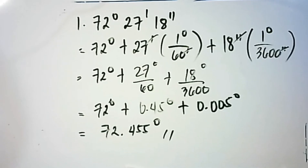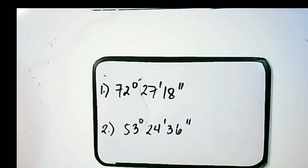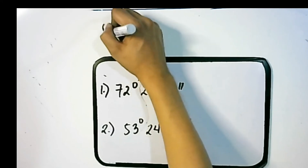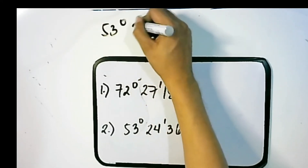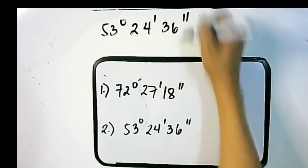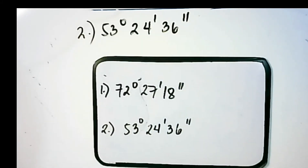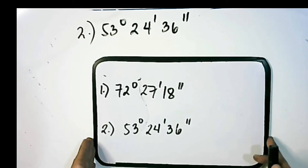Let's proceed to example number 2. For example number 2, we have 53 degrees, 24 minutes, and 36 seconds. We follow the same process as example number 1 to convert the DMS form into decimal degrees.